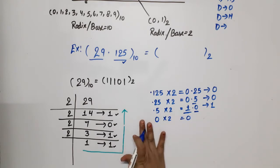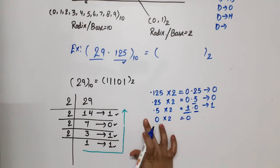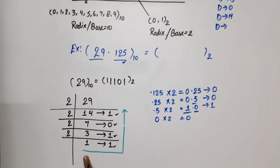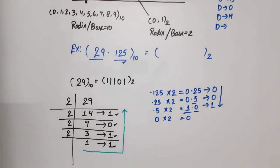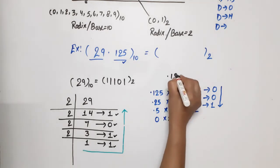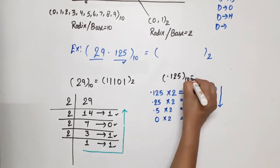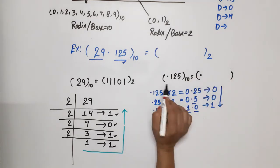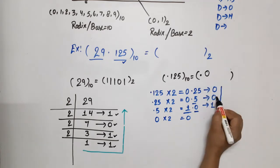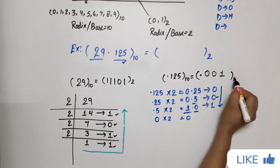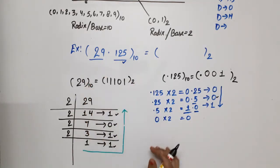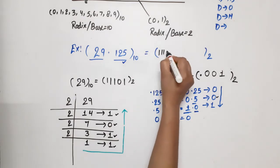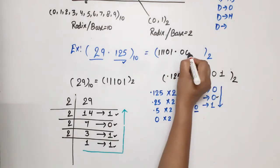When the result becomes 0 we stop. For the fraction part we read from up to downward — opposite of the integer part. So 0.125 in decimal equals 0.001 in binary. We place the point first, then write the integer parts extracted: 0, 0, 1.